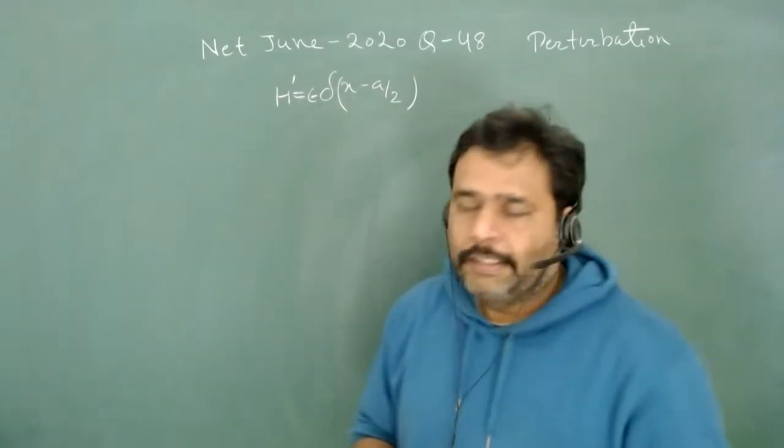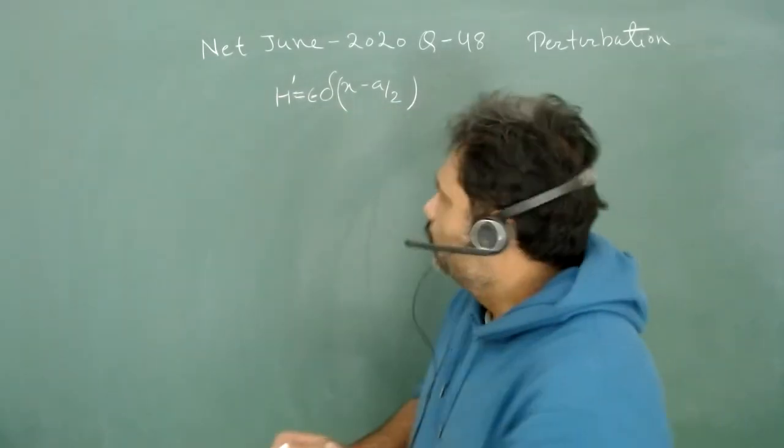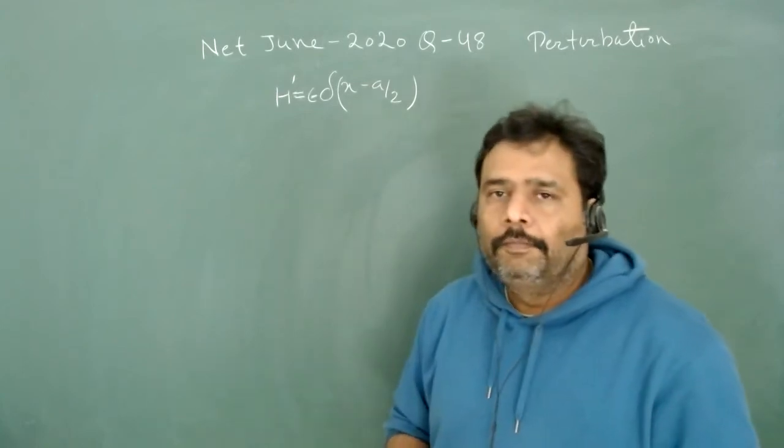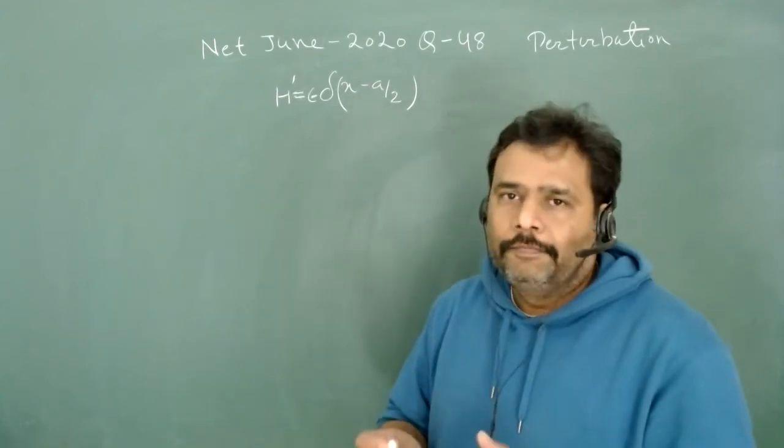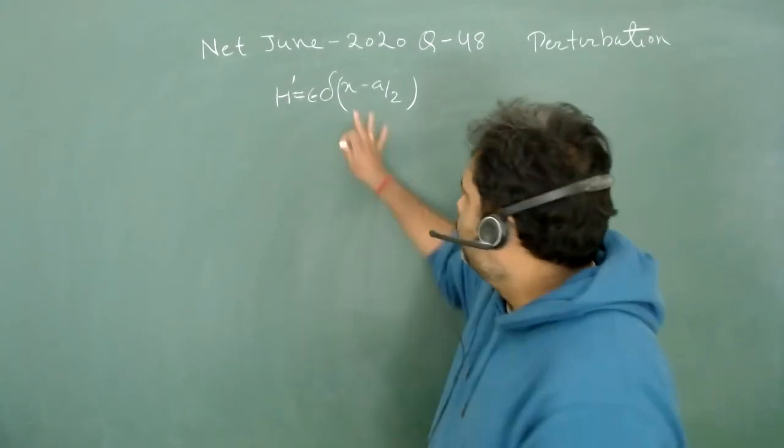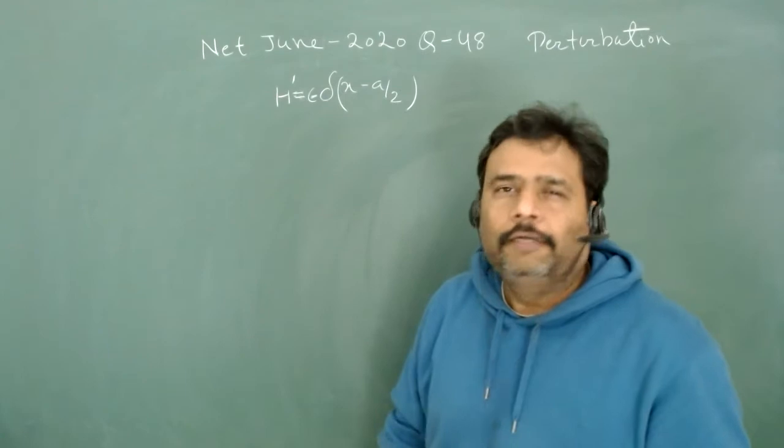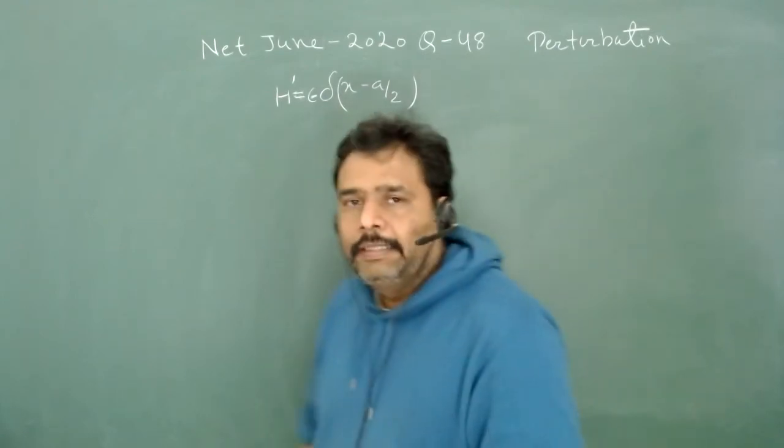Hello friends, let's solve one more problem from quantum mechanics. This problem is from perturbation theory, where the perturbation is a Dirac delta and the original system is a particle in a one-dimensional box of length a.